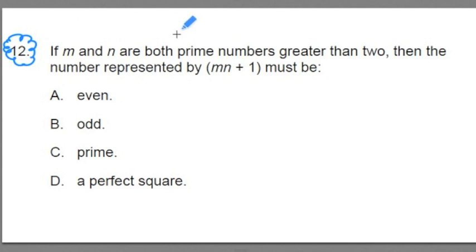It says, if m and n are both prime numbers greater than 2, the number represented by m times n plus 1 must be, and we have our options here. Now, read this to yourself. It's not that long. Pause the video, read it to yourself.